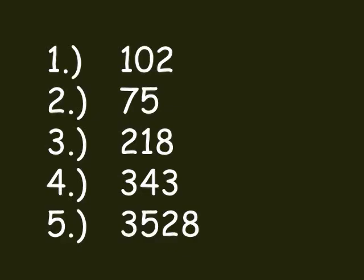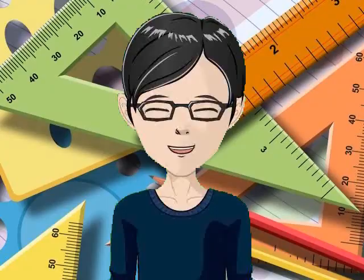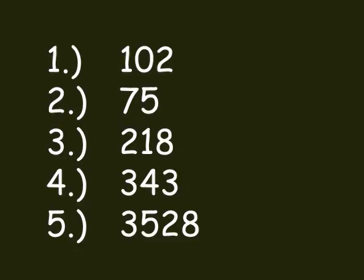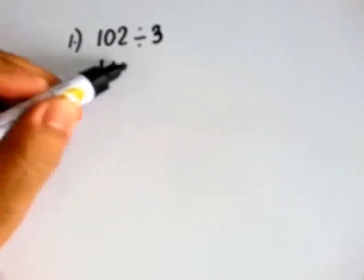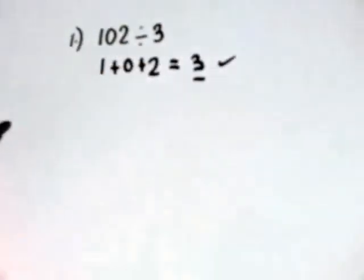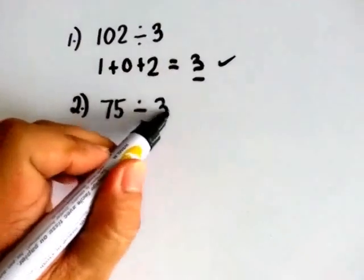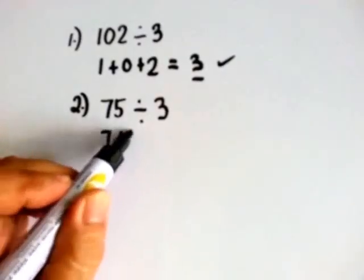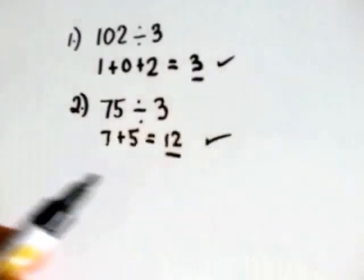Now let's see if you understand. If the number is divisible by 3, answer yes. If not, answer no. You can do this mentally or you may write down your answers on your notebook. Let's check your answers. Is 102 divisible by 3? Let's add the digits: 1 plus 0 plus 2 equals 3. Yes! 3 is in the multiplication table of 3. So 102 is divisible by 3. Is 75 divisible by 3? 7 plus 5 equals 12. 12 is in the multiplication table of 3. So 75 is divisible by 3.